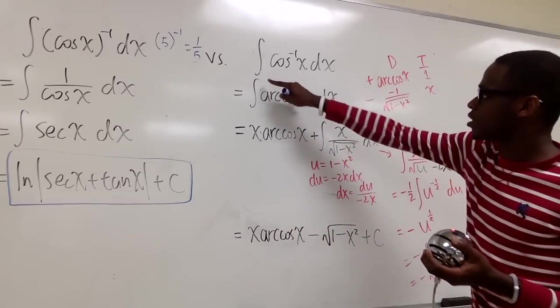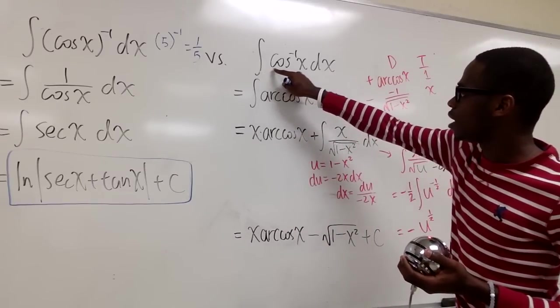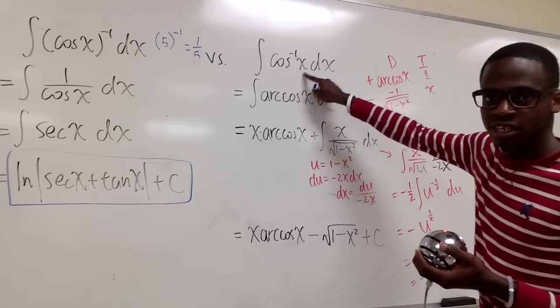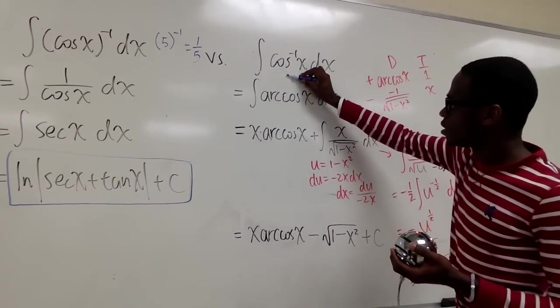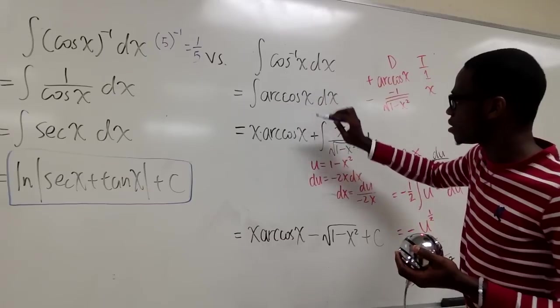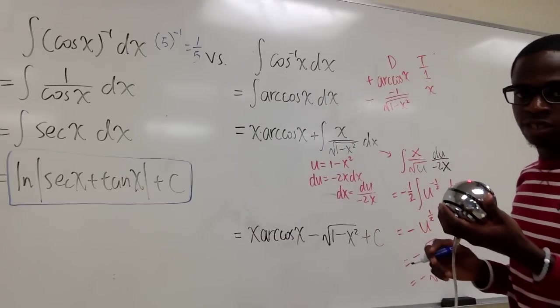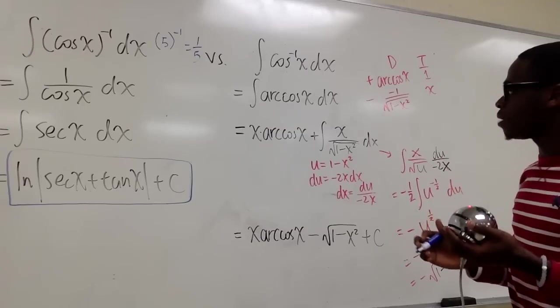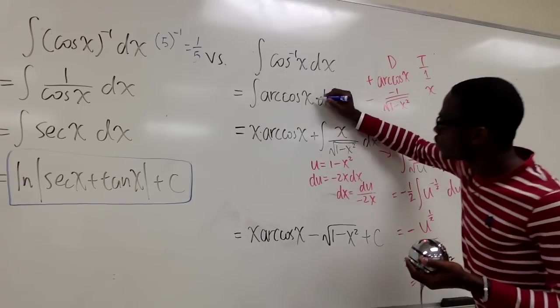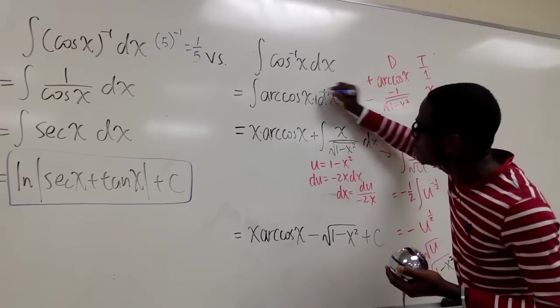Now moving on to this integral. This integral is inverse cosine of x dx, which is the same as having arc cosine x dx. The way we're going to be solving this integral is we're going to be using the DI method. But let us first multiply this by 1 because it doesn't change anything.